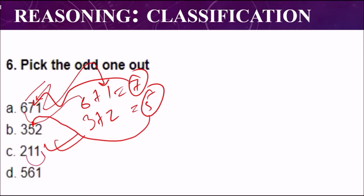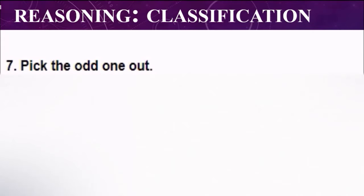But here in option C, two plus one is three, but the middle number is one. So it is different from all other threes. There might be some other logics also. Everyone's logic varies, but you have to find the correct answer, whatever your logic is.